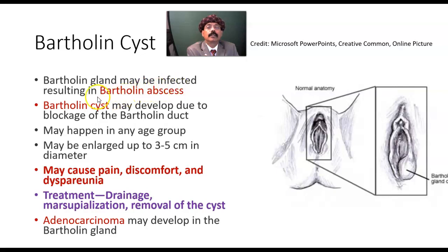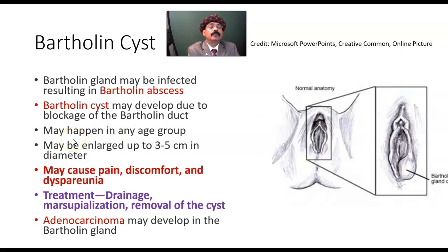The Bartholin gland may become infected, resulting in a Bartholin abscess. Infection may be due to sexually transmitted diseases or other organisms such as Staphylococcus — so it is not necessarily an STD. A Bartholin cyst may develop due to blockage of the Bartholin duct. Infection may happen in any age group and has a tendency to recur, so some individuals may develop cysts or abscesses repeatedly.